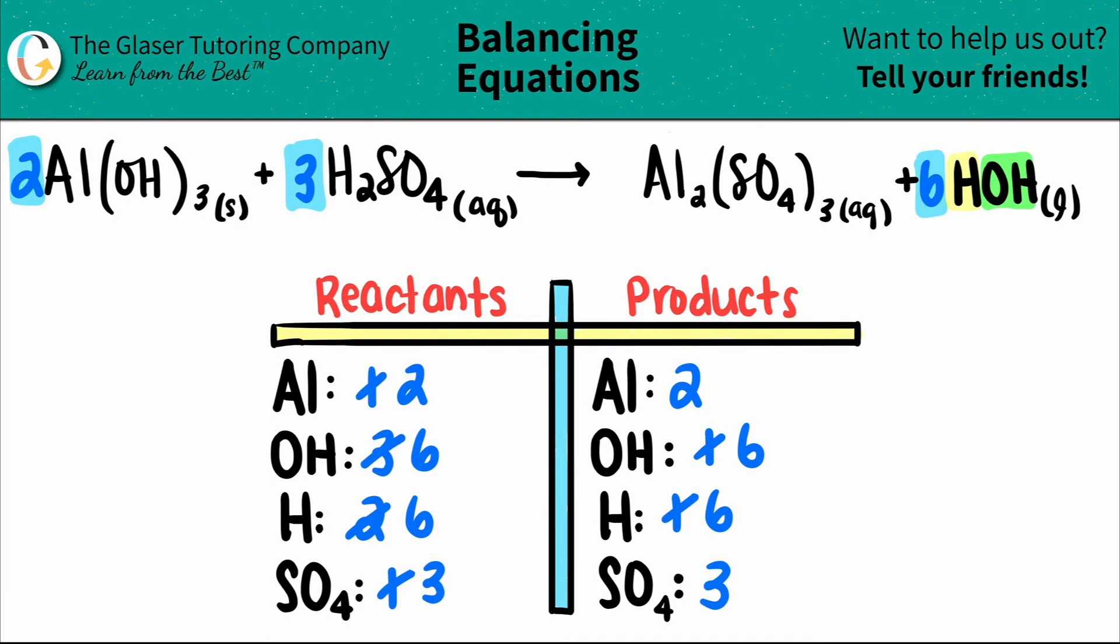Every number for the elements on both sides are the same. Now, if you want, you could turn this back into saying six H2O's, right? So the balanced equation at the end of the day is two Al(OH)3 plus three H2SO4, which will produce one Al2(SO4)3, and then six waters or six H2O's. And that is it.